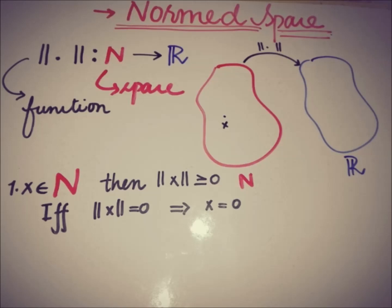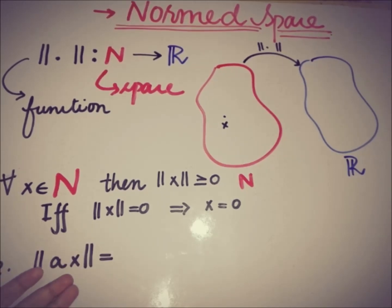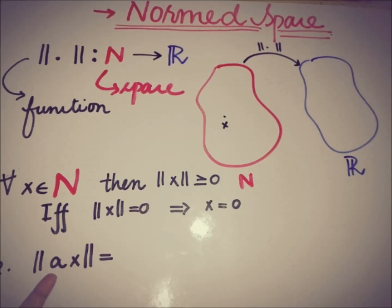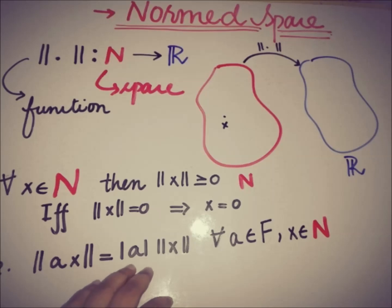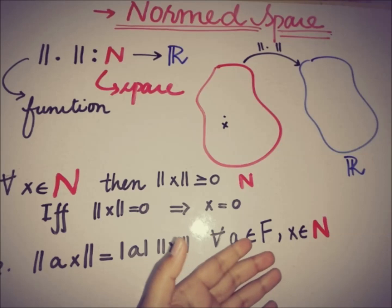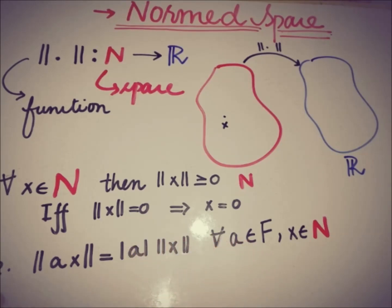The second axiom is: if we have a scalar a and an element x of N, and we take the norm of the scalar multiplication a·x, this must be equal to the magnitude of that scalar — because a scalar can be negative — multiplied by the norm of x. So the norm of a·x equals |a| times the norm of x, where a is an element of the underlying field F of space N.